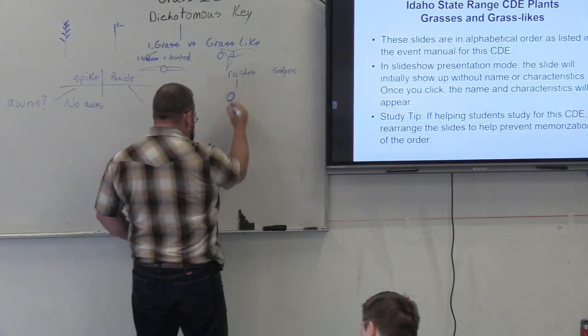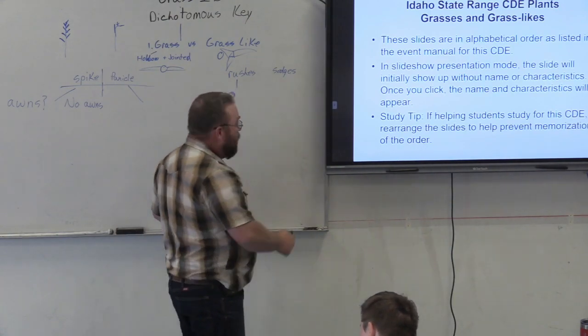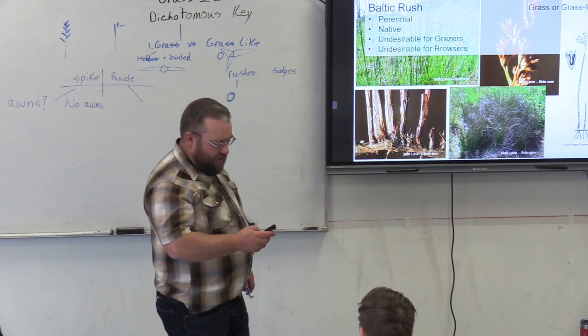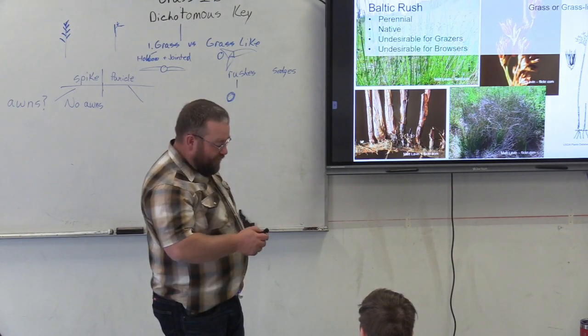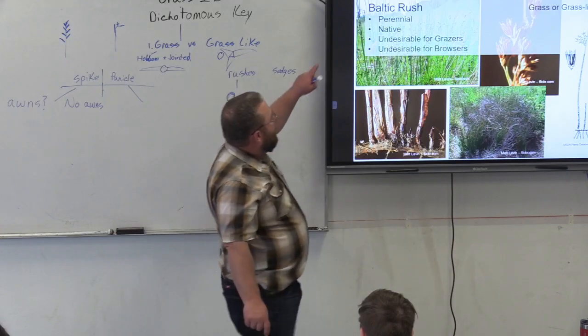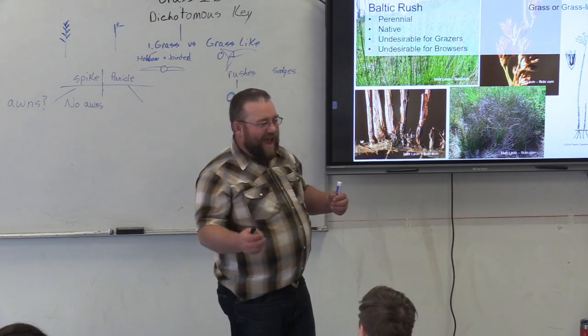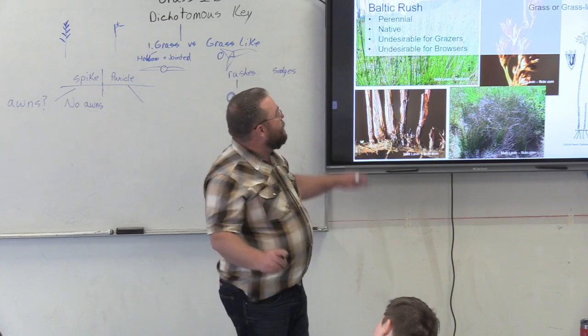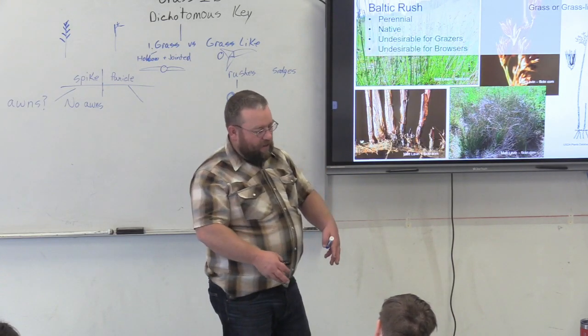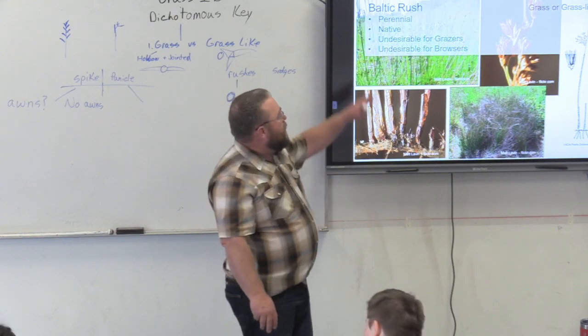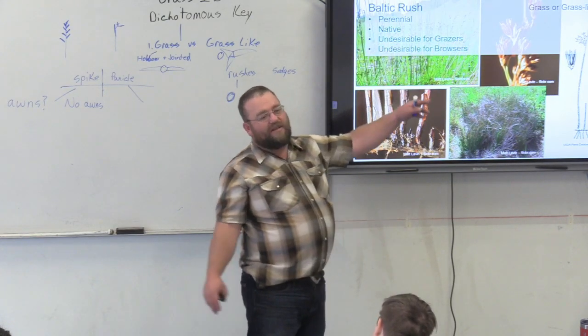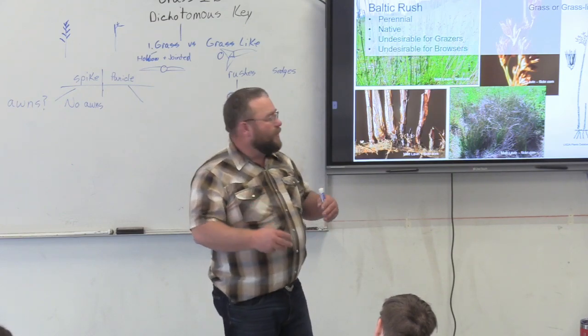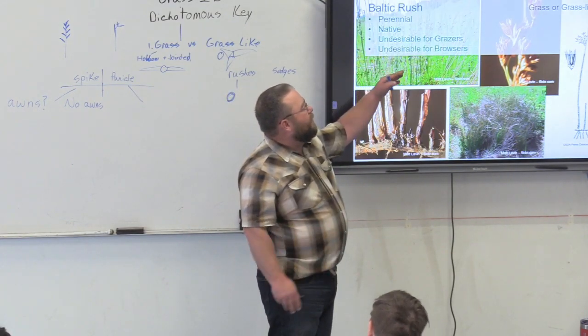Baltic rush. It's a rush, it's got a solid stem. It's a perennial native and undesirable. Perennial means it will live year after year. Annual means it completes its life cycle in one year. Native means it was put here long time ago. Introduced means man somehow has put it here, whether on purpose or accident.